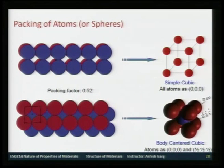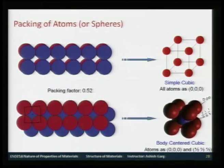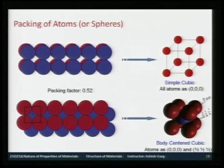You can work out the packing factor, which is the volume of atoms in one unit cell. For a simple cubic structure you have one atom per unit cell, and for body-centered cubic you have two atoms per unit cell. The packing factor for simple cubic works out to 52%, whereas for BCC it works out to 68%.